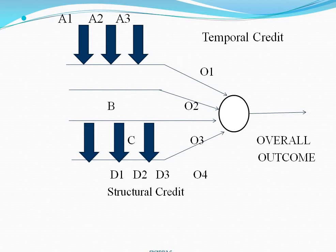To get the overall outcome — such as winning or losing a game — if I won the game, we must identify which internal decisions mainly contributed to that win. At what time were those internal decisions taken, and which internal decisions are going to get the credit for this overall outcome — that we can call temporal credit. For example, considering O1 and O3 — these two internal decision outcomes are useful to get the overall outcome.